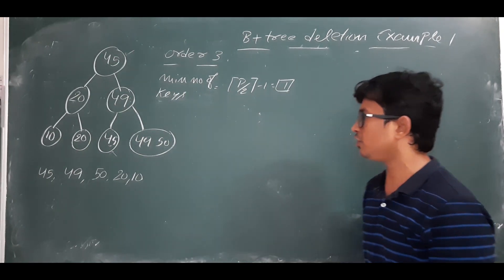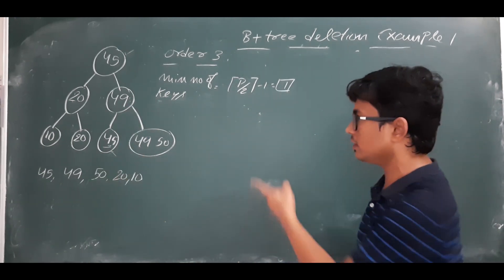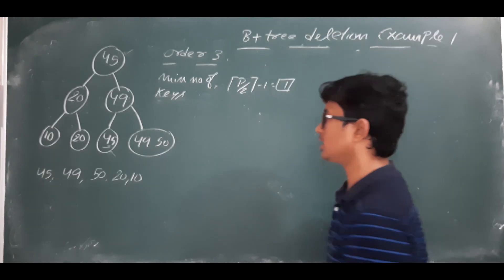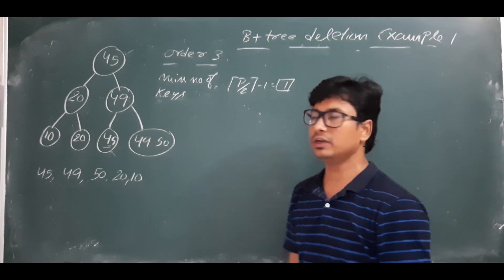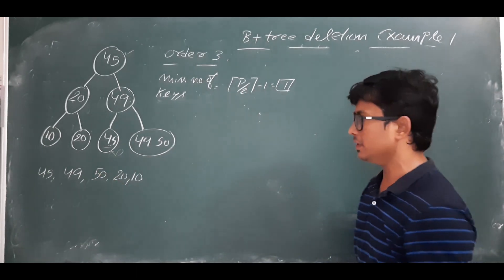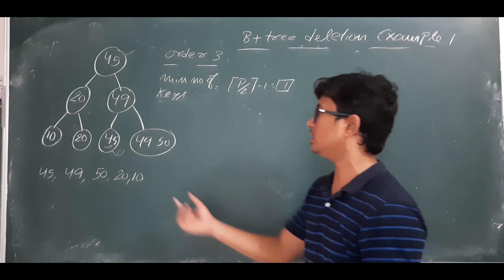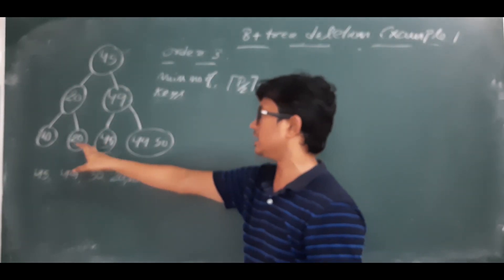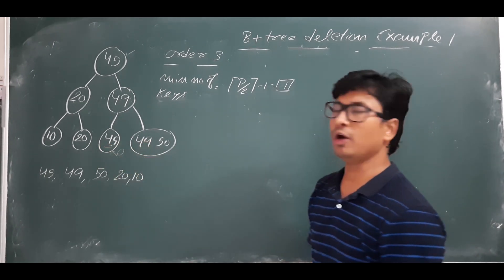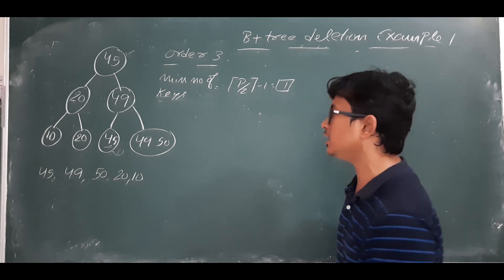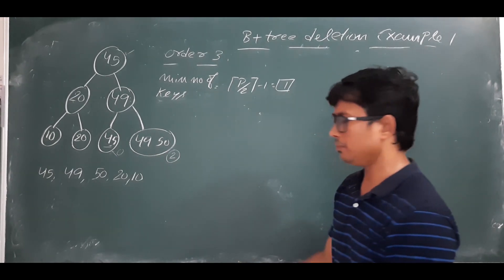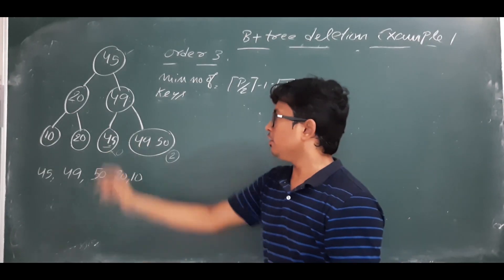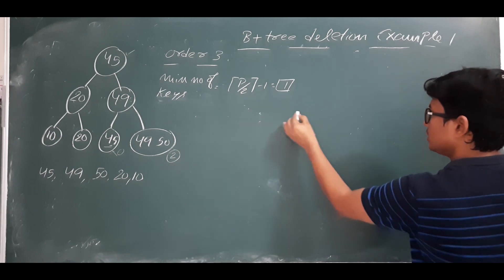45 is in a leaf node. If we delete 45, it causes an underflow because the node had only one element and now it becomes zero. We need to borrow from a sibling. This node has no left sibling, so we check the right sibling. The right sibling has two elements (49 and 50), which is more than the minimum of one, so it can lend an element.